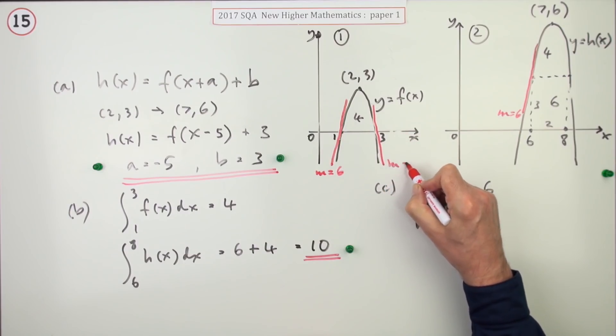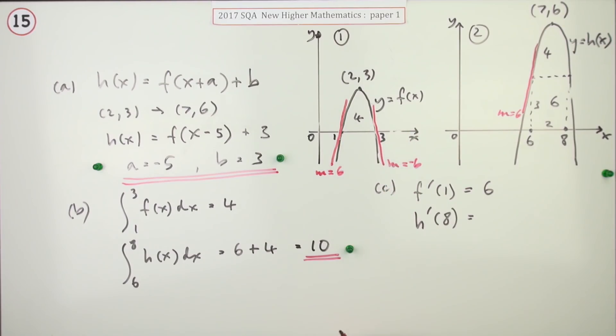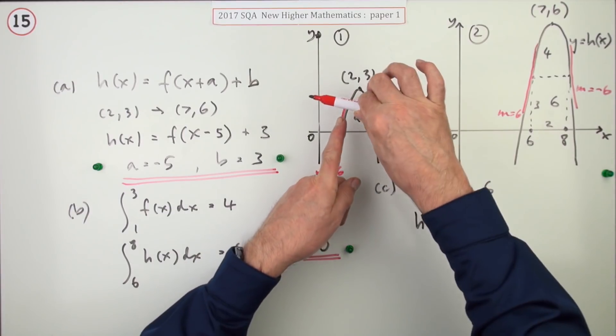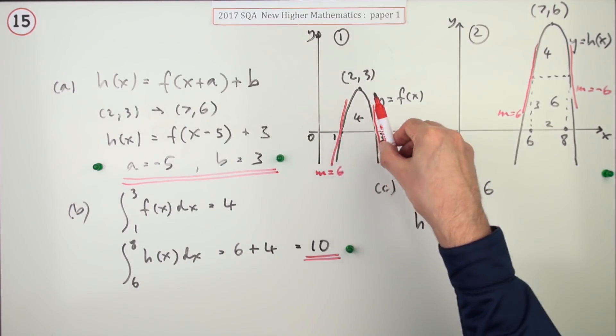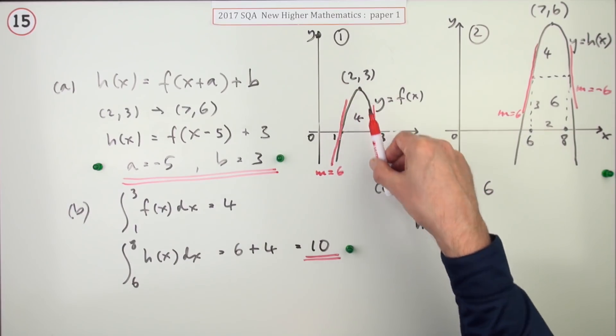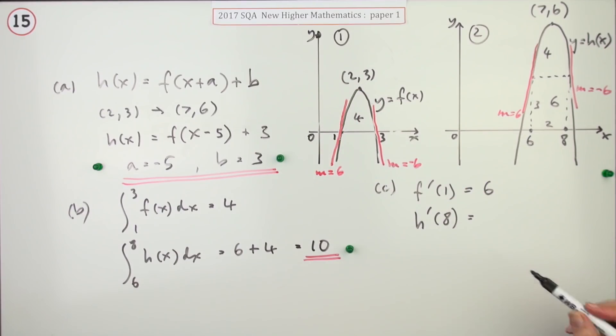And since that corresponds to this point here, or for the same reason here, because it's a parabola, that must also have a gradient of negative 6. Notice it's not perpendicular to it. It's not negative 1 upon 6. It's the same slope, only instead of going up, it's going down. So here we go, just stating that, that equals negative 6 for the last mark.